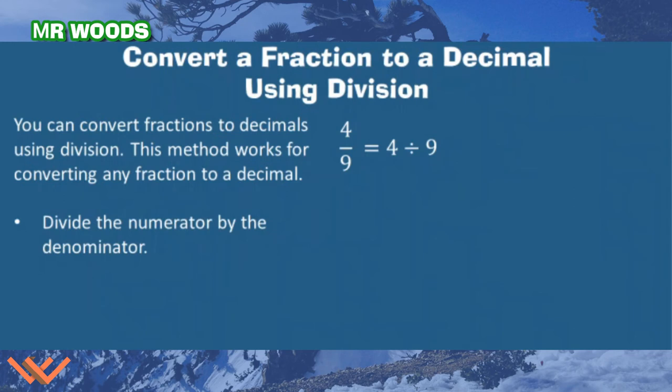I can use division to convert a fraction to a decimal. This method works for converting any fraction to a decimal, so it doesn't matter if that was three divided by five or one hundred eleven divided by twenty-seven. I'm going to get a decimal. Divide the numerator by the denominator. So I have four divided by nine, and I'm looking at this going, wait a minute, I cannot divide four by nine. But I can divide forty by nine because four times nine is thirty-six.